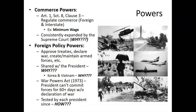The War Powers Act states the president cannot commit forces overseas for more than 60 days without a declaration of war. Since then, presidents have tested this act. For example, after September 11th and the invasions of Afghanistan and Iraq, George W. Bush did not initially have a declaration of war, raising the question of whether he would have to pull troops out after 60 days. He was able to get that declaration before the 60 days, but it was a real question.